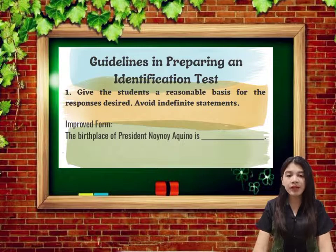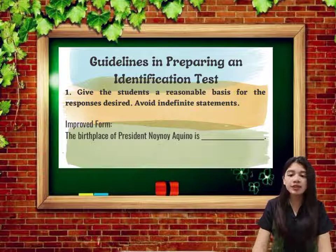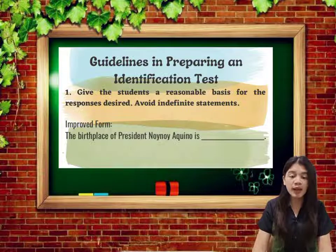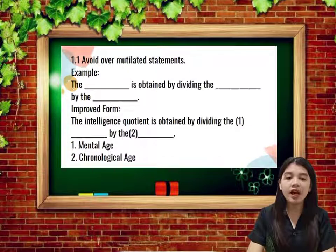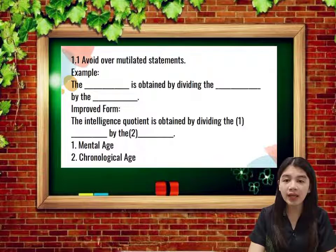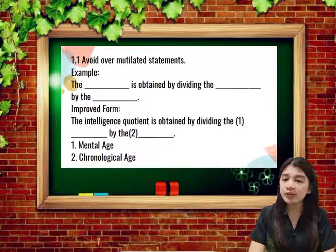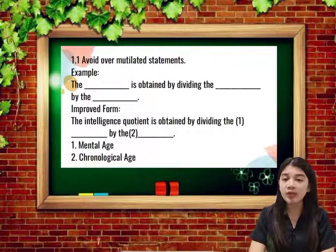Let's proceed to the guidelines in preparing an identification test. The first one is give students a reasonable basis for the responses desired — avoid indefinite statements. For example: 'The birthplace of President Noynoy Aquino is blank.' The second one is avoid over-mutilated statements. For example: 'The blank is obtained by dividing the blank by the blank' confuses students. The improved form states: 'The intelligence quotient is obtained by dividing the first blank by the second blank,' providing a clearer context for answers.